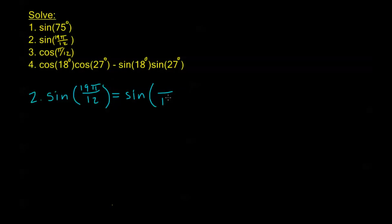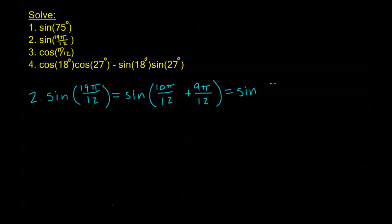We can use addition or subtraction here. Notice that if I break 19π into 10π and 9π, both of these are going to reduce. This is the same as sine of 10π over 12, which is just 5π over 6, plus 9π over 12, which is 3π over 4. Now we can work with these.